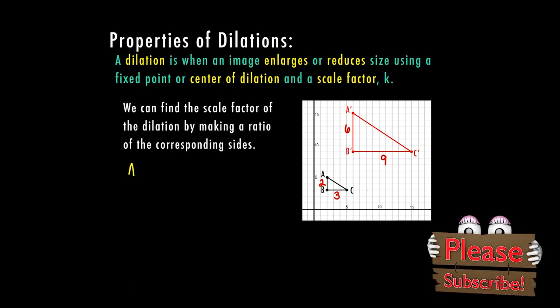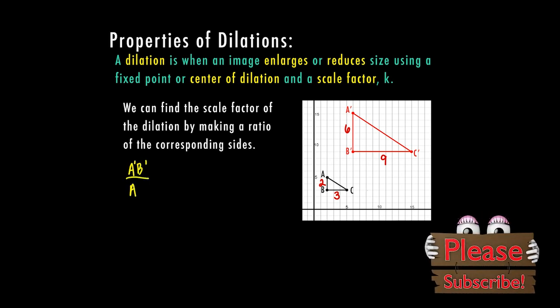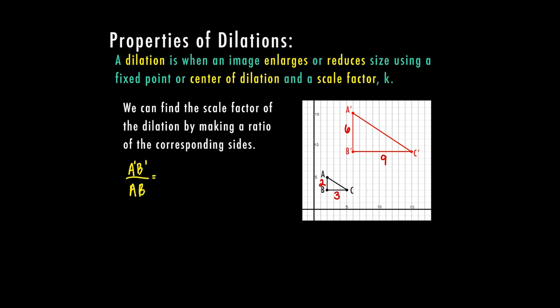I'm going to have my ratio of my prime over my original. So my distance between A and B prime is 6, and my distance between A and B in the original is 2, and that's going to reduce to 3. Then if I find my B prime to C prime distance over my original BC distance, I have 9 over 3, which is also equal to 3.